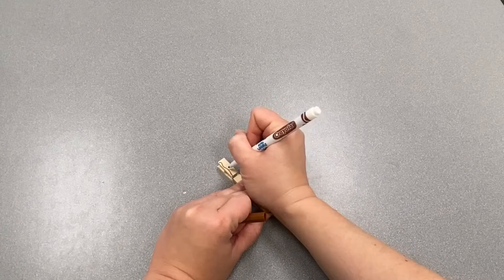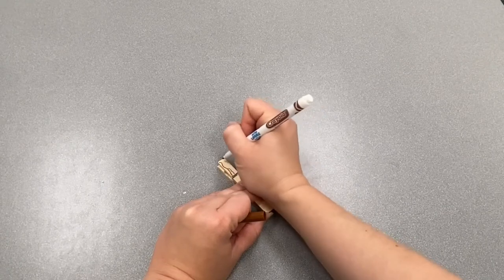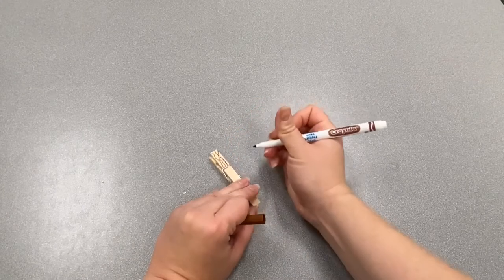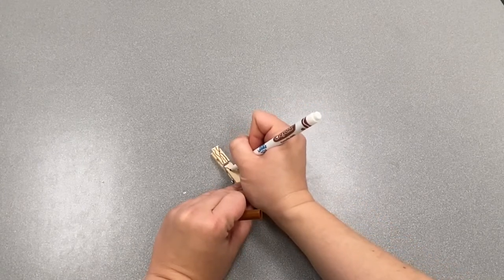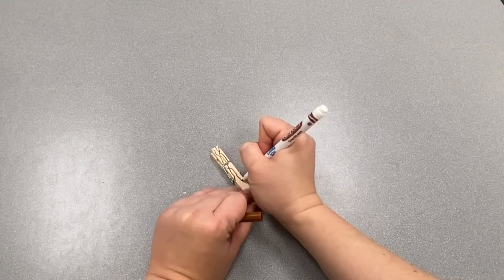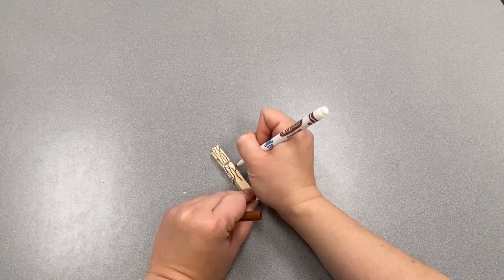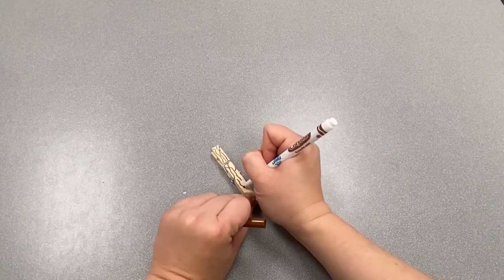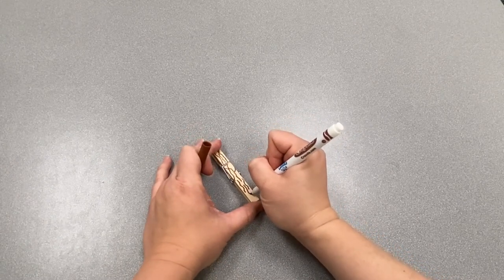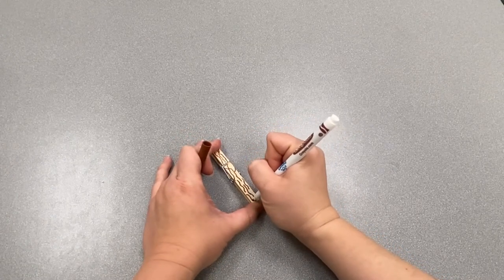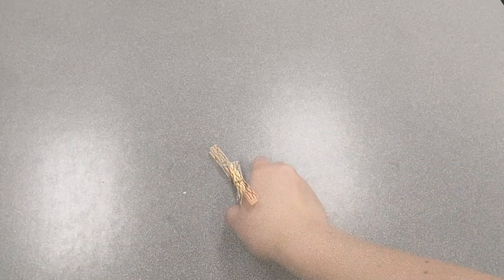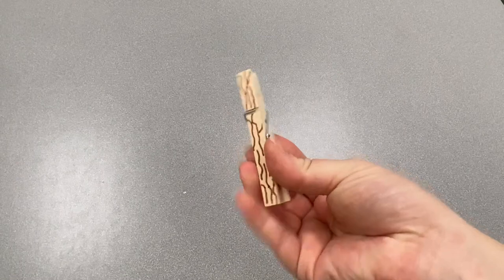You can connect some because sometimes the tree has pieces that look like they connect. You can draw as little or as much as you want. You can even color the whole clothespin brown if you want with no bark. There we go, that looks pretty good.